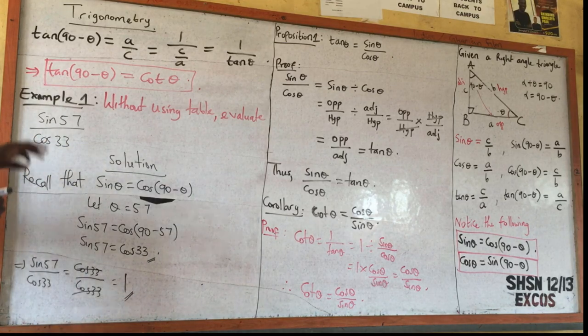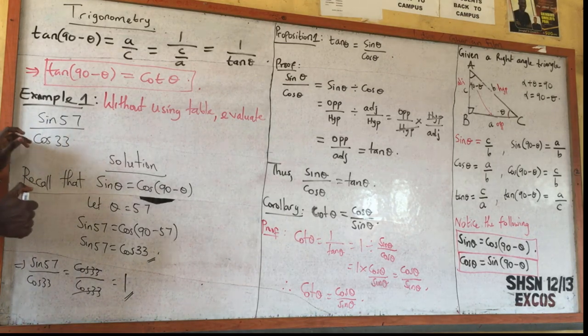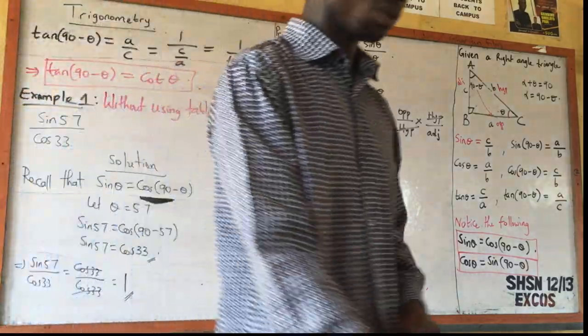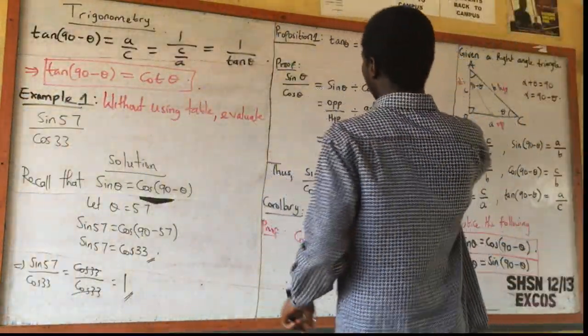You can verify this by pressing sin 57 divided by cos 33 on your calculator — you will see the answer is exactly 1.